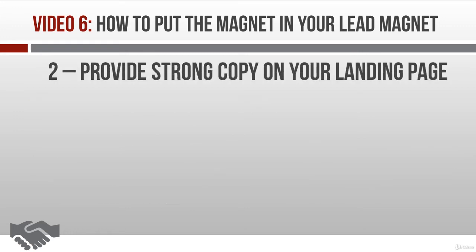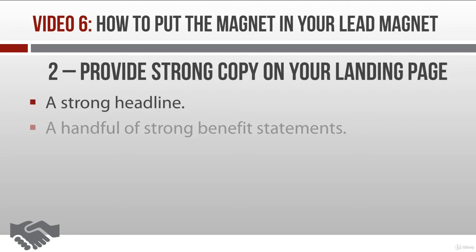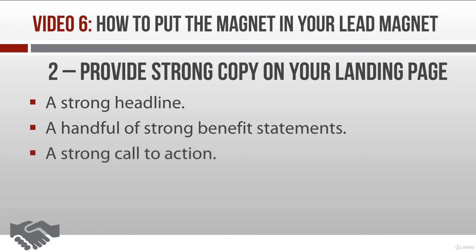The second tip for attracting prospects is to provide some strong copy on your landing page. You don't need to provide a lot of copy. You just need to be sure that you grab your prospect's attention and then give them a really good reason to join your mailing list. You can accomplish this with a strong headline that presents your lead magnet's biggest benefits, along with another few lines or bullet points that present a handful of the product's other strong benefits. Then you want to end with a call to action where you specifically tell prospects what to do next to get their hands on the free lead magnet.